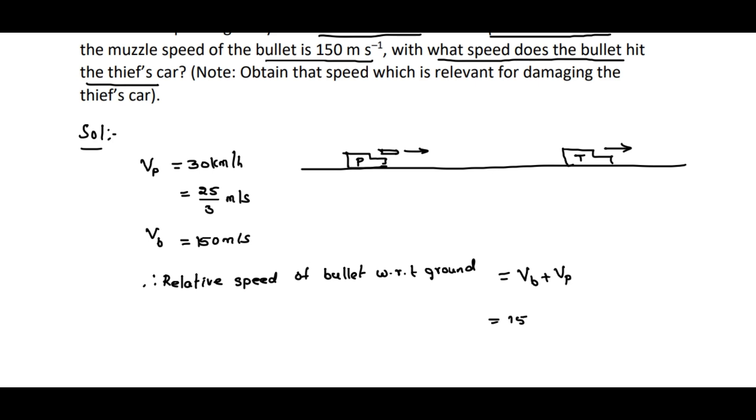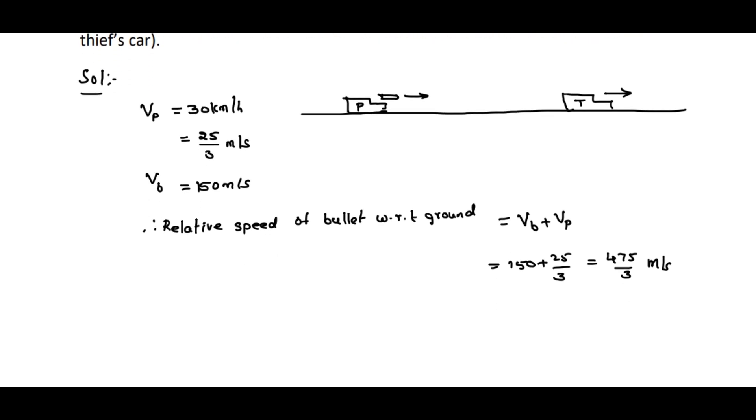Coming to this value, we have 150 plus 25 divided by 3. That is equal to 475 by 3 meters per second. Now, while coming to the speed of the thief's car, I am writing Vt, that is equal to 192 kilometers per hour, which is 160 meters per second.